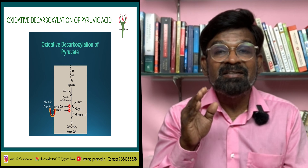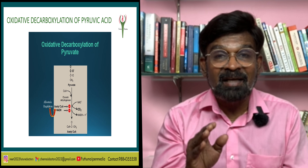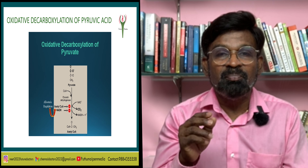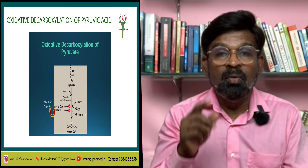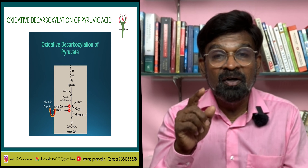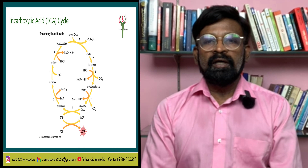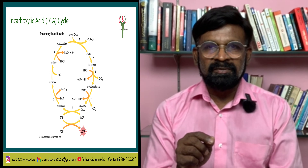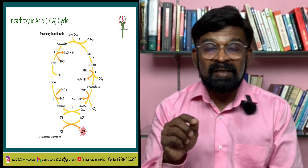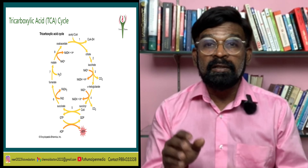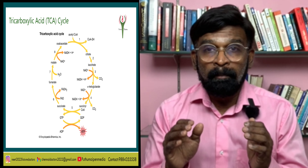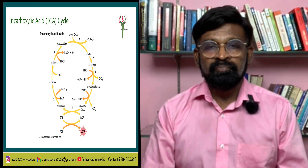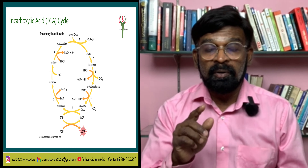Acetyl-CoA acts as a connecting link between glycolysis and the citric acid cycle. During this process, two molecules of NADH are produced by the breakdown of two molecules of pyruvic acid. The acetyl-CoA then enters a cyclic pathway — the Krebs cycle — in the mitochondrial matrix. Various coenzymes including NAD and CoA also participate in the reaction catalyzed by pyruvic acid dehydrogenase.